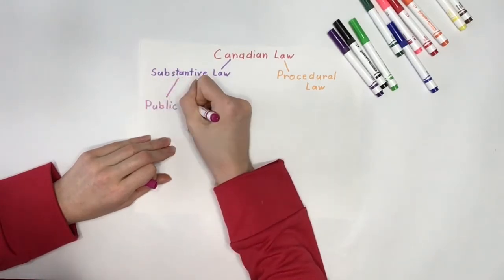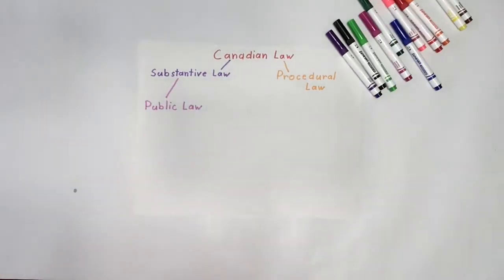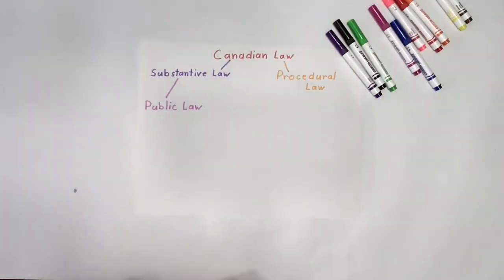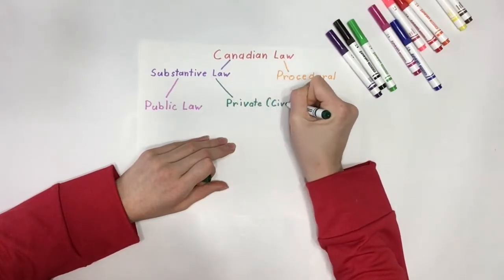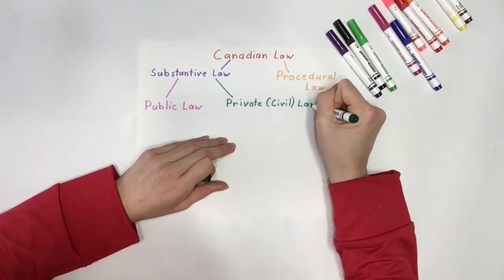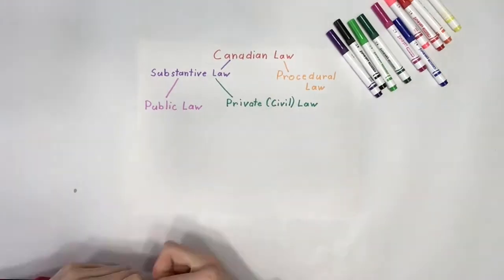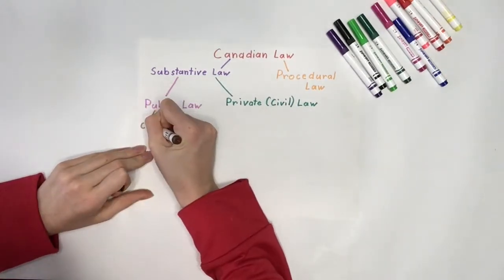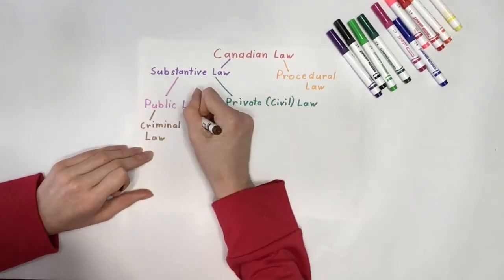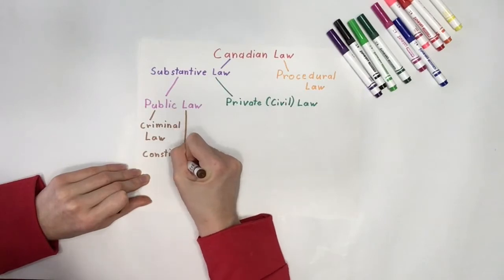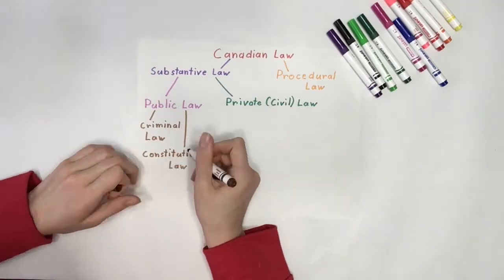Substantive law is further split into public law and private or civil law. Public law always has the government involved and is further broken down into criminal law, which covers crimes against society; constitutional law, which defines the governmental structure; and administrative law, which manages the relationships between the citizens and the government.